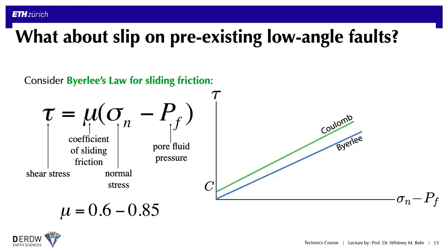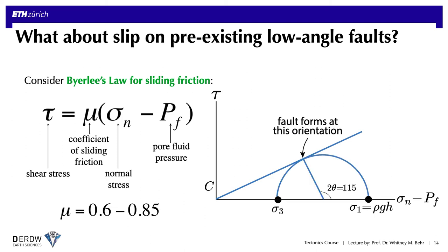Plotting that schematically, Byerlee's law is the blue curve. It passes through the origin because of the lack of cohesive strength, and the Coulomb curve is the green one. This shows that pre-fractured rocks are generally weaker than unfractured rocks. Doing the same exercise of examining what the 2-theta angle should be for pre-fractured rocks in an extensional regime, we come up with a 2-theta angle of 115 degrees. This translates to a fault dip of around 58 degrees, so it's not really much different from the Coulomb case.